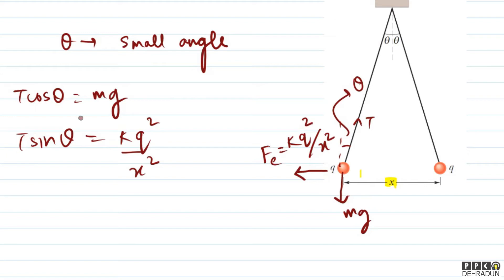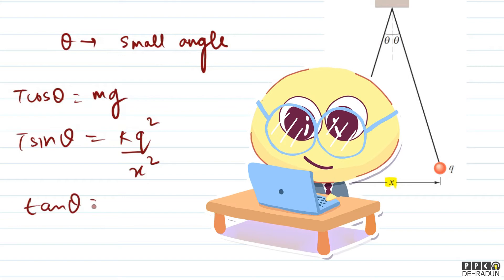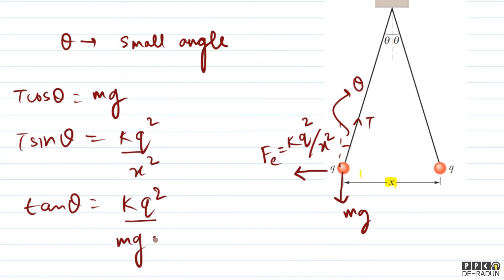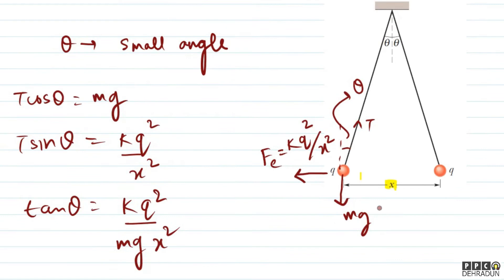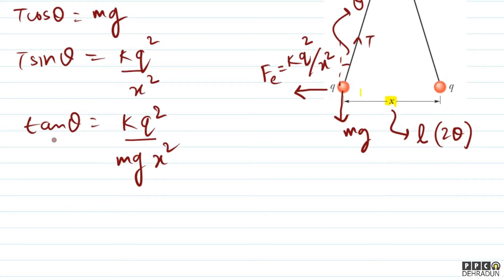तो बच्चों, इन दोनों equations को divide करके tension को cancel कर सकते हैं। यहाँ से tanθ = kq²/(mgx²) आ जाएगा। अब यहाँ पर theta जो है वो small angle है। और x जो है वो arc length का role play कर रहा है, तो x = l × 2θ, यानी arc length = radius × angle वाला formula use किया है।